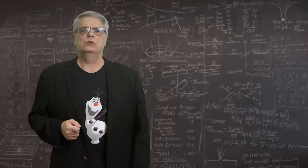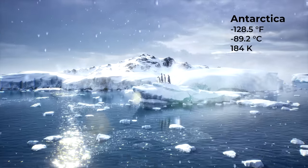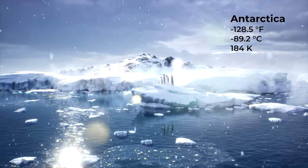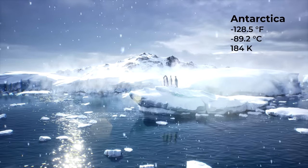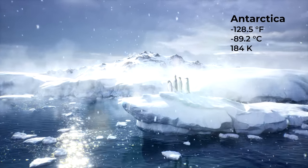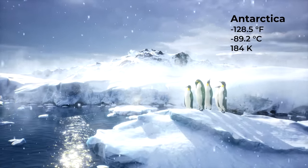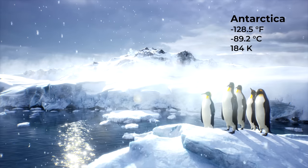What about the coldest recorded temperature on Earth, out in nature? That was back in 1983 in Antarctica, when the temperature hit a bone-chilling negative 128.5 degrees Fahrenheit, which is negative 89.2 degrees Celsius and 184 Kelvin. Still a long way to go to absolute zero.